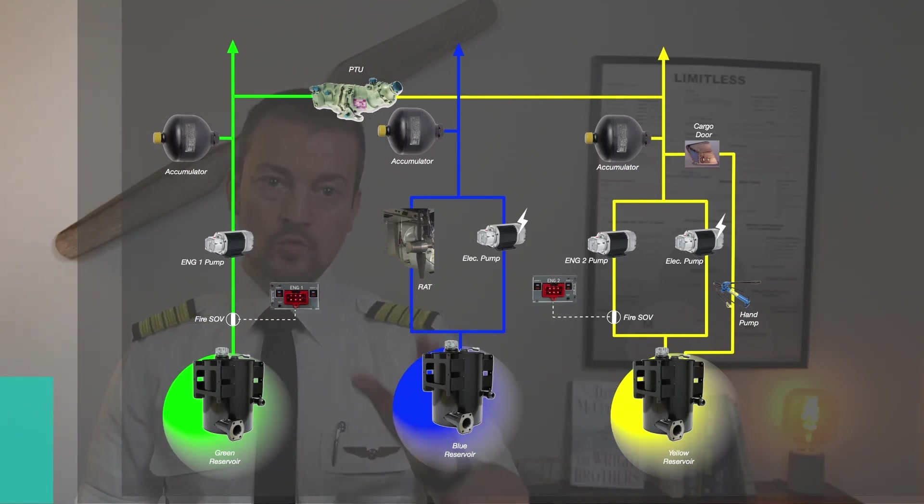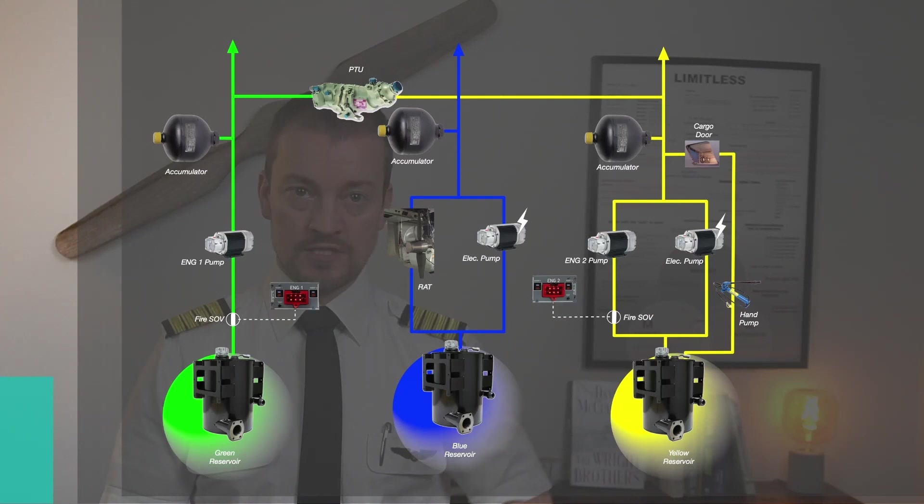Here, normal braking, we have on the green system. Alternate braking, we have on the yellow system. But what we do have on the yellow system is the parking brake and that we need, which is why we start engine number two first.